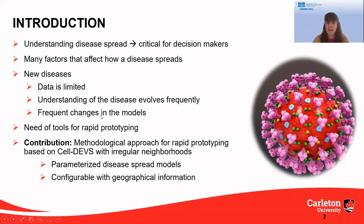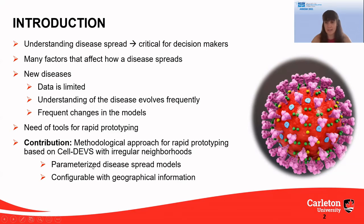We need tools that allow us to include the new data available and changes in the understanding about the disease in the model. That's why, in this paper, we propose a methodological approach for rapid prototyping based on cell-DEVS and irregular neighborhoods. In particular, we propose a parameterized disease spread model that is configurable with geographical data.